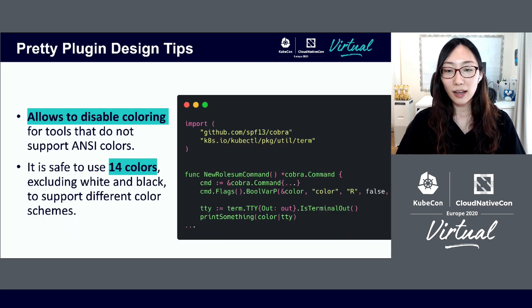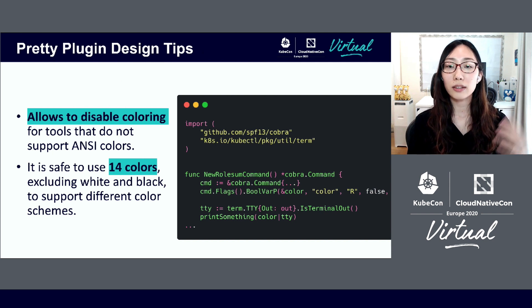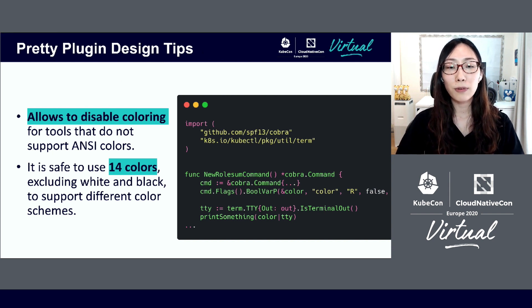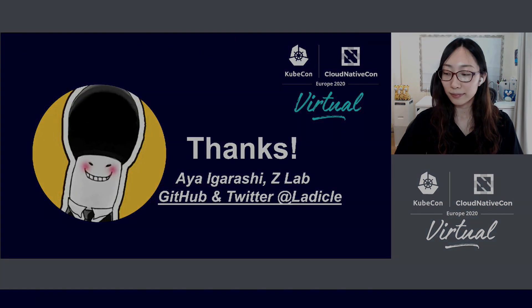Finally, here are some tips for developing a pretty command. The first is to provide the option to disable ANSI color. This will allow you to integrate with tools that don't support ANSI color, such as continuous integration tools. The second is to use only 8 colors, except for black and white. We use different color schemes in the terminal, so by limiting the colors, you make the text readable. That's all. Thank you very much.